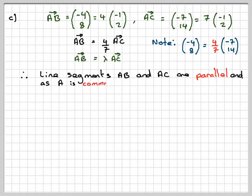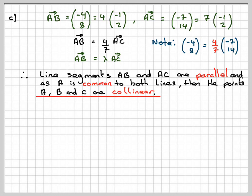And so, as A is common to both lines, then the points A, B, C are collinear. So what we're basically saying is that AB and AC are parallel. But because they both consist of the point A, then the three points must be in a straight line.